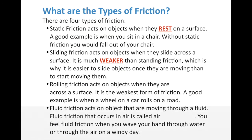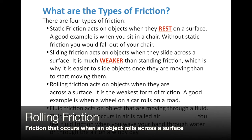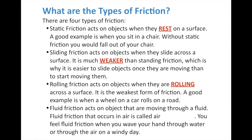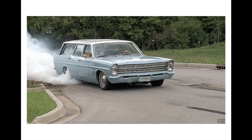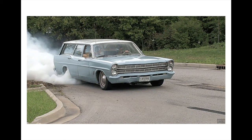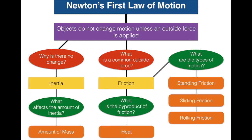The third type is rolling friction. Rolling friction acts on objects when they're rolling across a surface — it's the weakest form of friction. A good example is wheels on a car rolling on the road. It's essentially sliding friction on a wheel: as the surface of the wheel touches the road, it continually moves because the wheel is in motion. Tire burnout is an example of rolling friction — the wheels spin so fast without moving that they produce friction, creating smoke from all the heat generated.